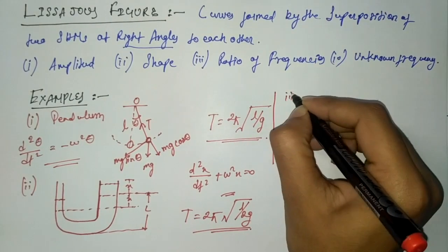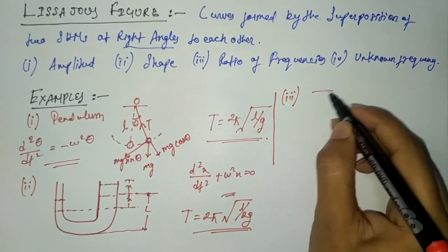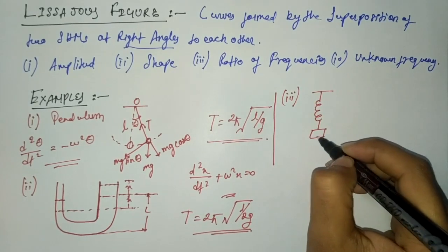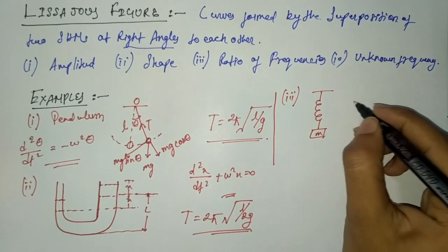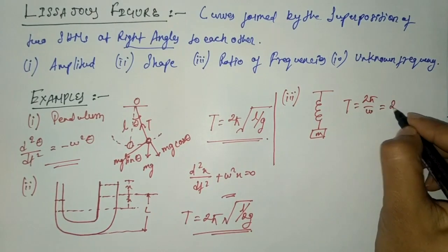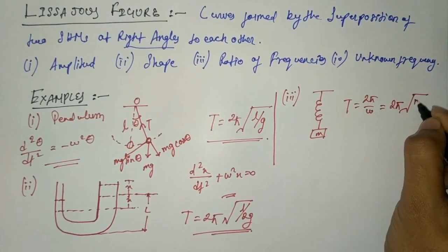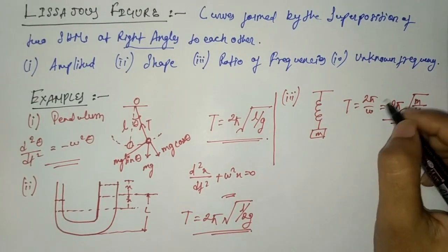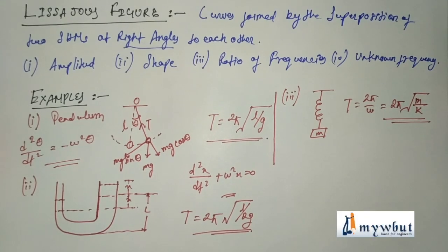Example three: a mass m attached to a spring with spring constant k. The time period formula T = 2π/ω can be written as T = 2π√(m/k). This concludes the first portion of module 1 on simple harmonic motion. The next videos will cover damped vibration and forced vibration together for better understanding.